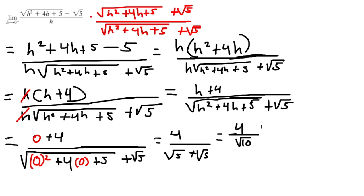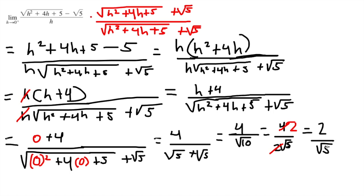We can simplify further: the square root of 10 is just 2 radical 5. The 2's cancel, and our final answer is 2 square root of 5. This is our answer for this problem.